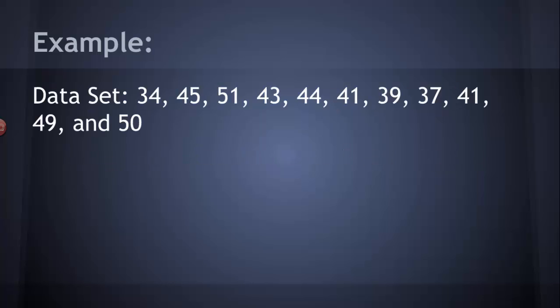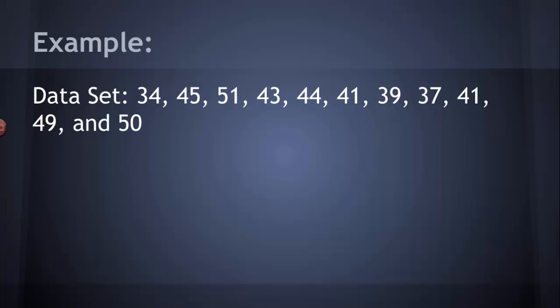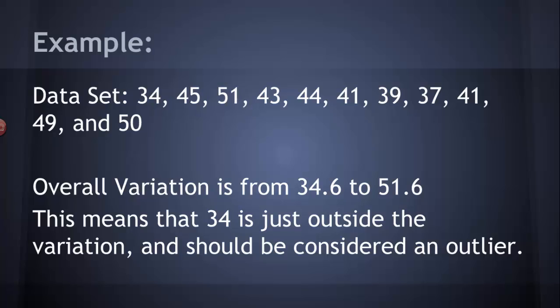If we want to figure out if there are any outliers, well, we have to figure out what does that mean? The overall variation, 43.1 minus 8.5 is 34.6. That's the smallest value in our acceptable variation. The largest value would be 43.1 plus 8.5, which is 51.6. So as long as the values in our data set fall in between 34.6, the smallest possible value, and 51.6, the largest possible value, they're fine. Well, 34 is just a little bit too small. It's just outside the variation. We have to consider that one an outlier. That means that that particular guess is very far away. It's too far away compared to the rest of the class.